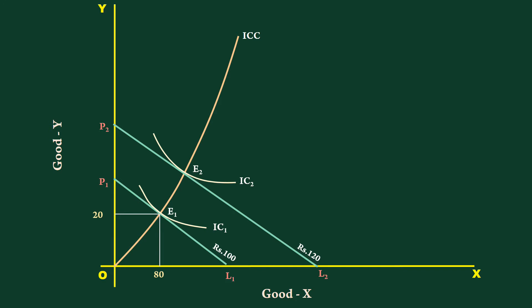At this point, the consumer buys 25 units of good Y and 84 units of good X. After an increase in income, he buys more of both the goods. Hence, both the goods are normal.